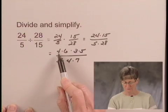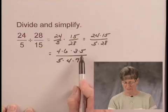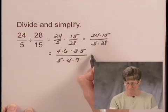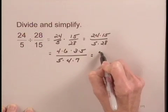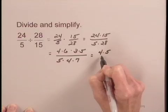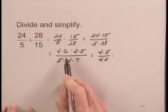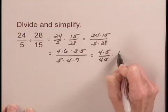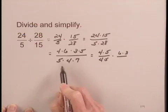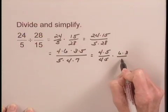Now I see that I have a 4 in the numerator and the denominator and also a factor of 5, so I can write this as the product 4 times 5 over 4 times 5 times. In the numerator I have 6 times 3, and I've taken out the 4 and the 5. I have a 7 in the denominator.